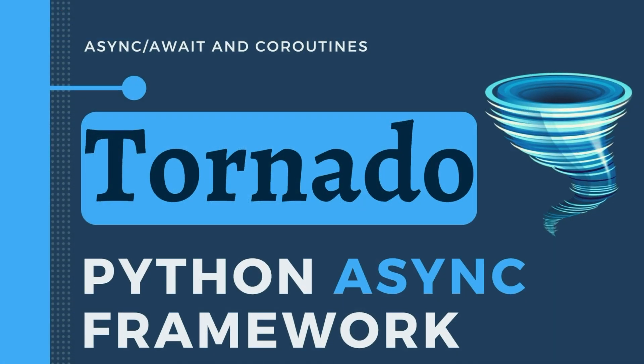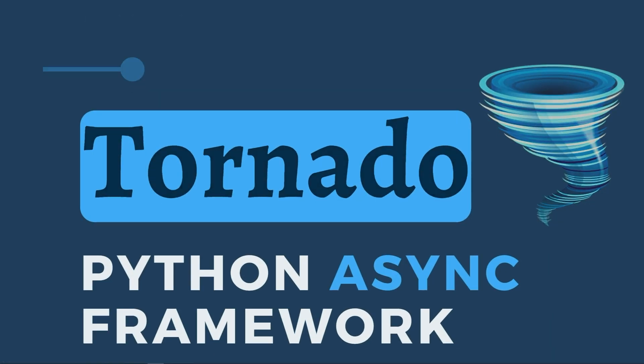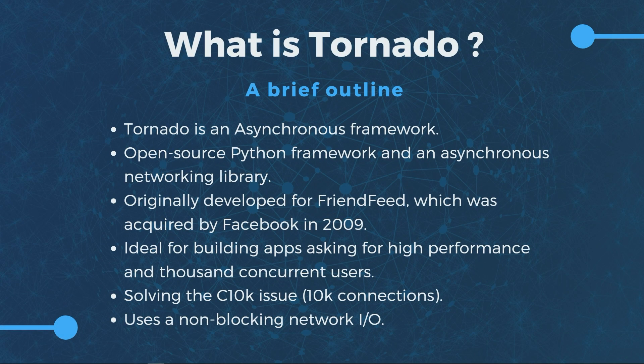Tornado is an open-source framework but also an asynchronous networking library. It was originally developed for a company called FriendFeed, which was acquired by Facebook in 2009. To understand Tornado, we need to know what it is good for — it is ideal for building apps requiring high performance and several thousand concurrent connections.